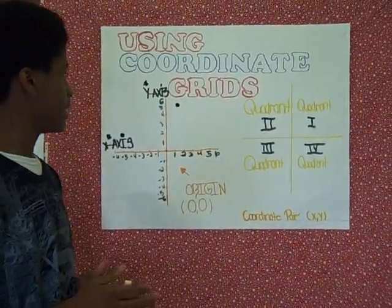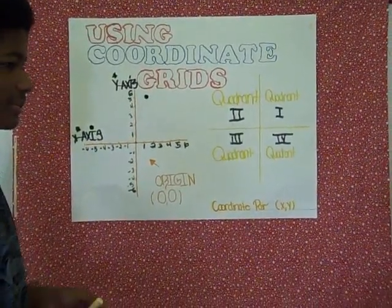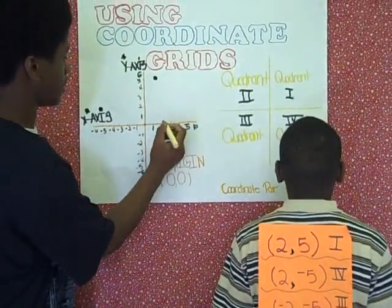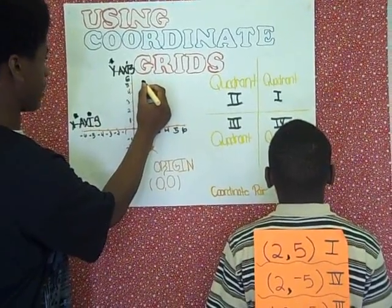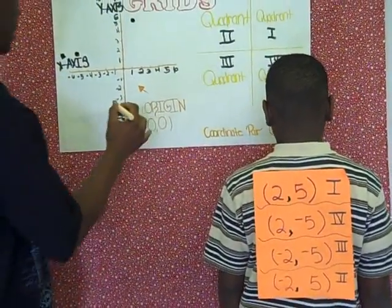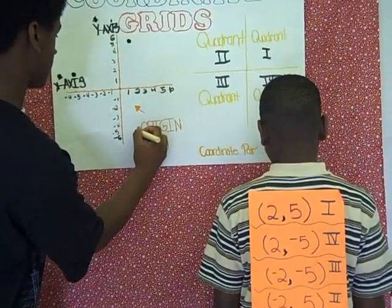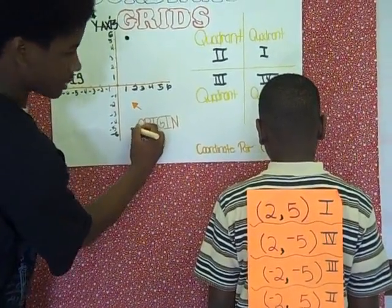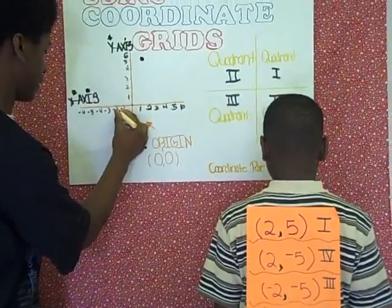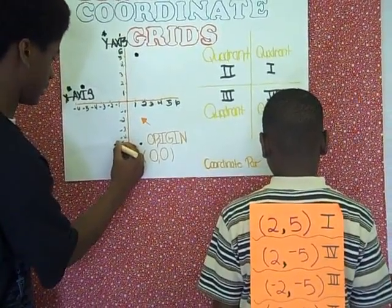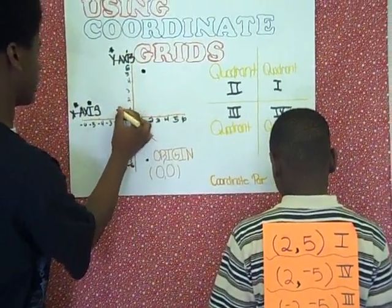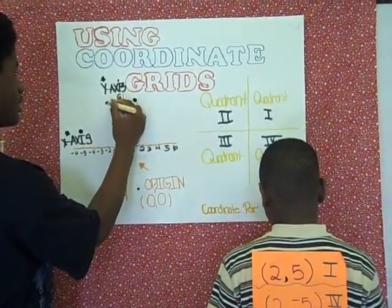I want to show you how to plot the numbers on a coordinate grid. The first set of numbers is 2 comma 5, so we're going to go 2 all the way up to positive 5. The next set is 2 comma negative 5, so we're going to go 2 down to negative 5. Then negative 2 comma negative 5 — go to this side and down to negative 5. My last set is negative 2 comma positive 5, staying here and going up to positive 5. That's how you work plots.